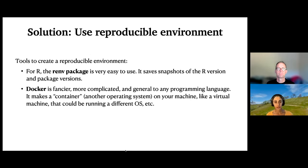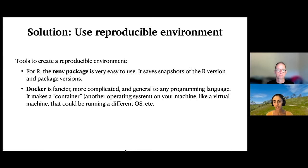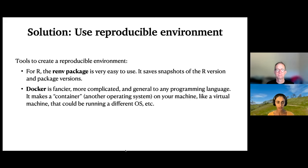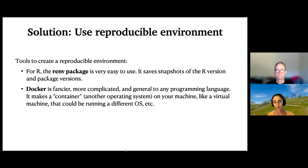There are multiple tools to create a reproducible environment. A very straightforward option in R is something called `renv` — reproducible environment — which is super easy to use. It saves snapshots of the software version you were working with and any loaded packages. If you want to jump back to how things were when you analyzed the data, it's just one line to take you back to that scenario. A much more complex option is Docker, which works for any programming language and makes what's called a container — almost like another operating system on your machine, similar to a virtual machine — that could be running totally different software specifications.